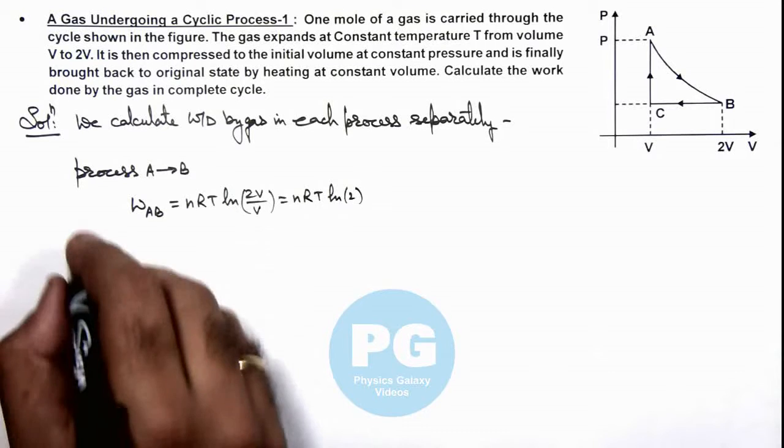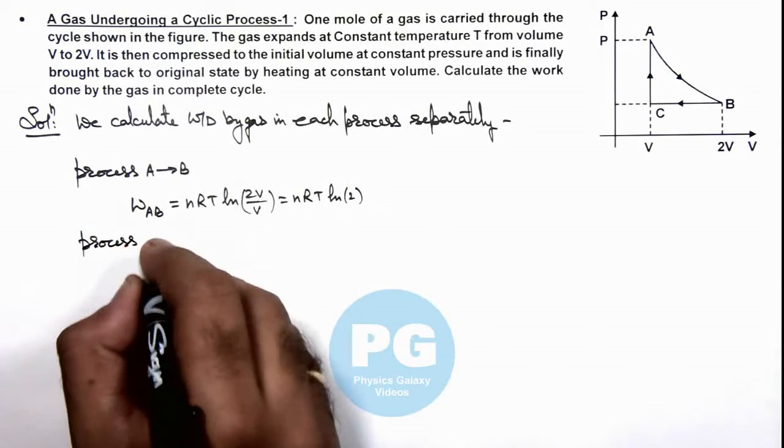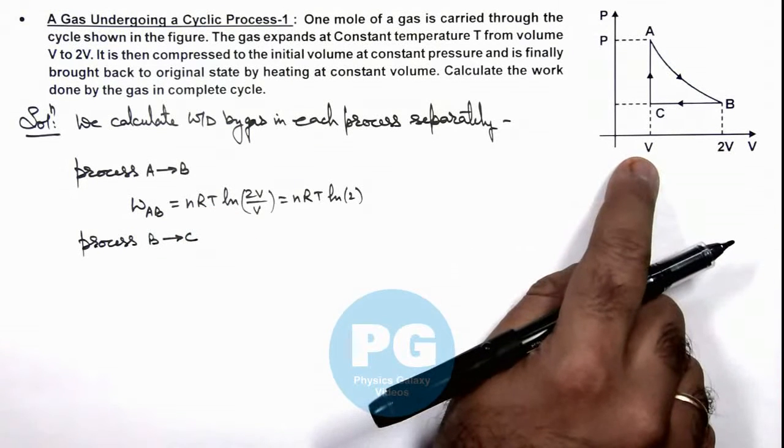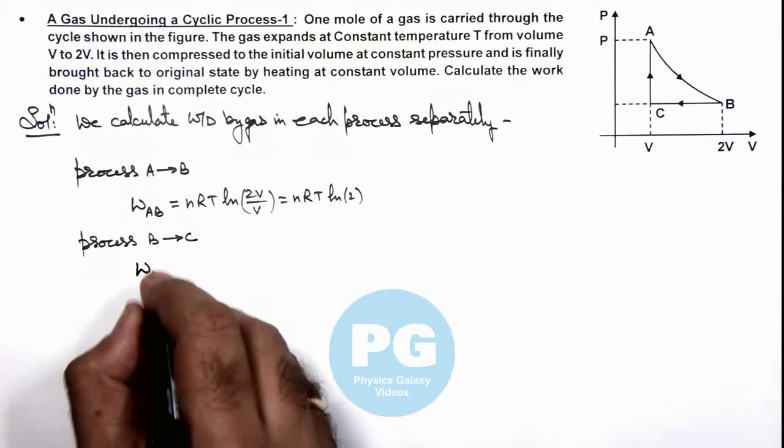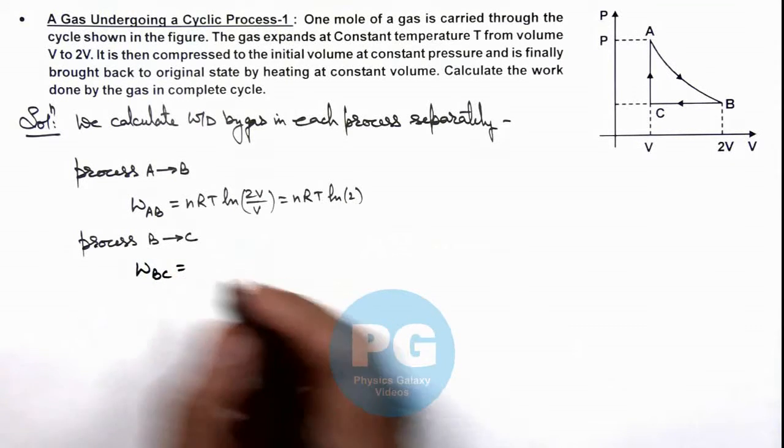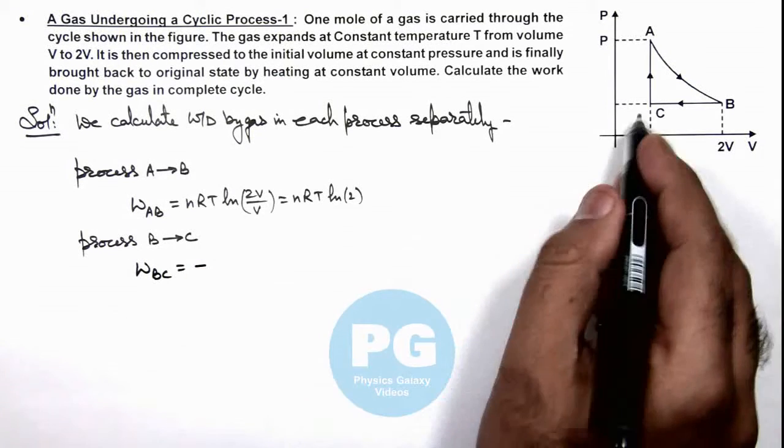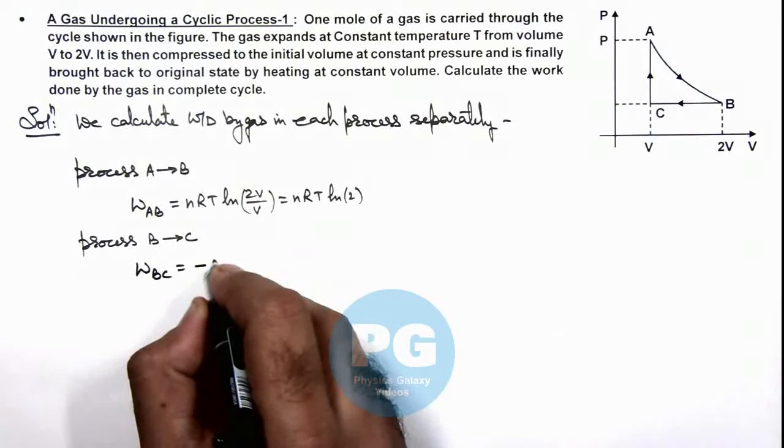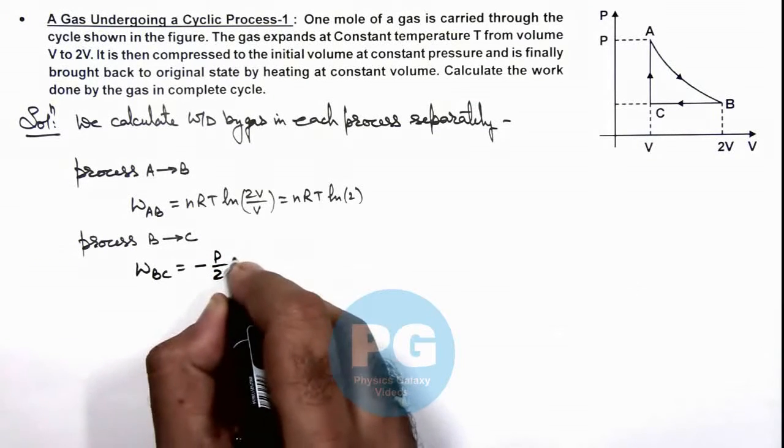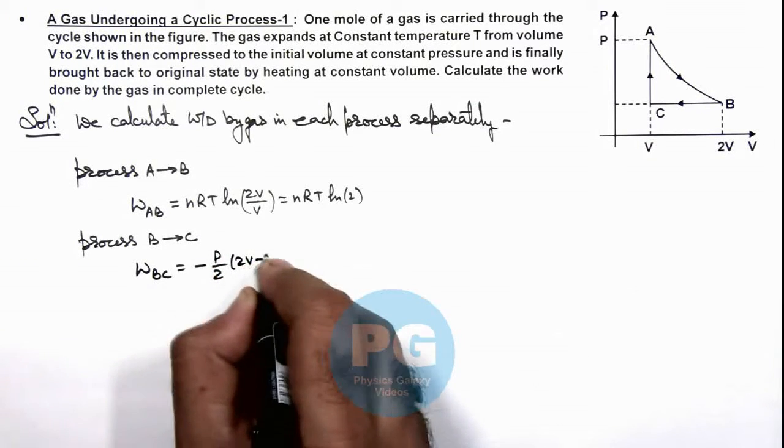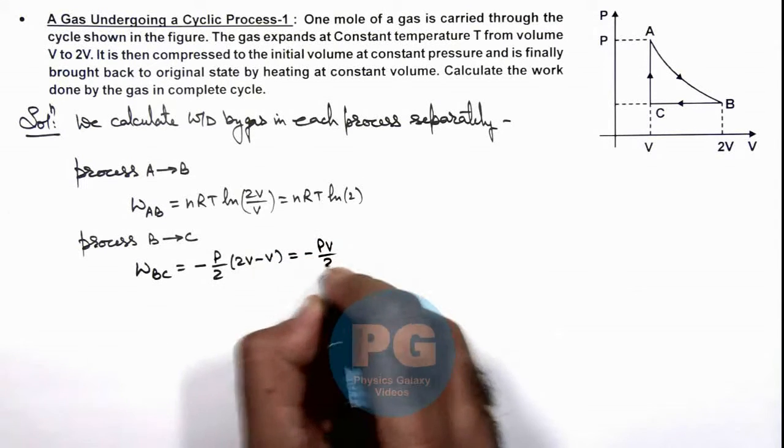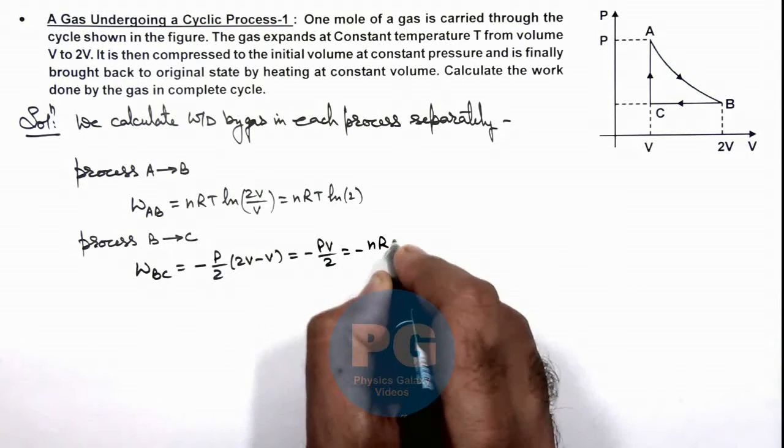Now, for process B to C, the volume is compressed, so work done will be negative. For this isobaric process, work done can be written as the negative of pressure times change in volume. At this point, since volume is double, pressure will be half. So it is minus P/2 multiplied by (2V minus V), which equals minus PV/2, or it can be written as minus nRT/2.